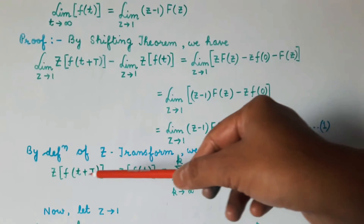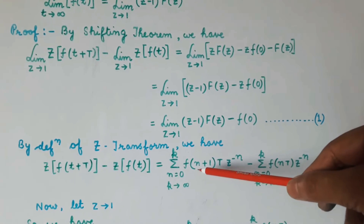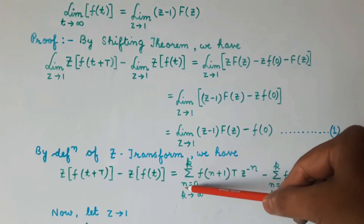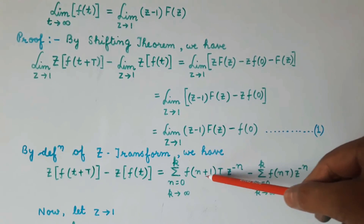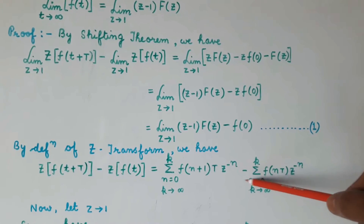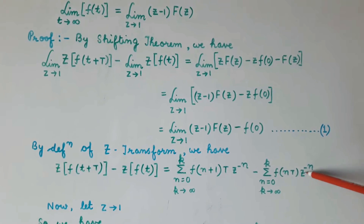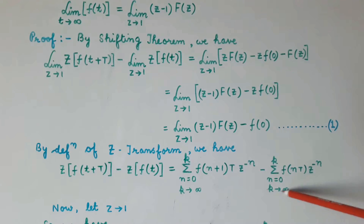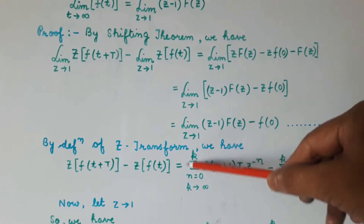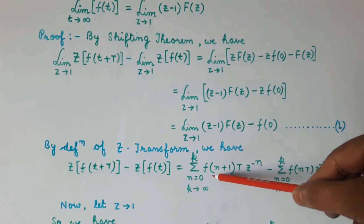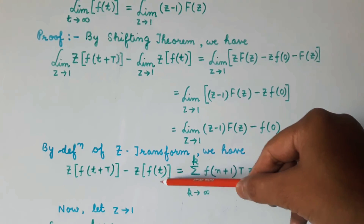Now from the definition of z-transform, we can write the z-transform of f(t+T) minus the z-transform of f(t) as the summation from n equals 0 to k, where k tends to infinity, of f(n+1)·T·z to the power minus n, minus the summation from n equals 0 to k of f(n·T)·z to the power minus n, when k tends to infinity.